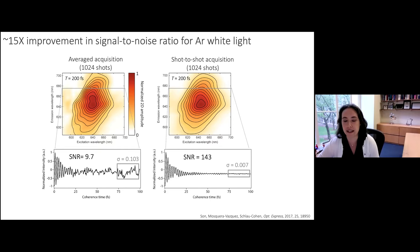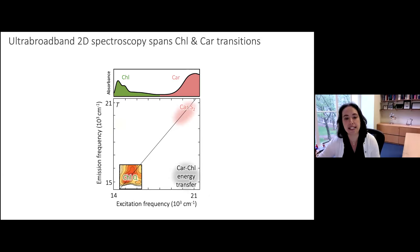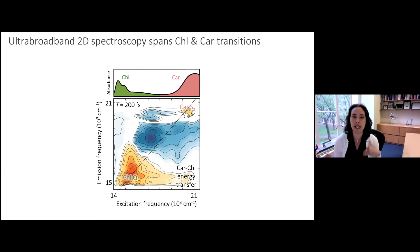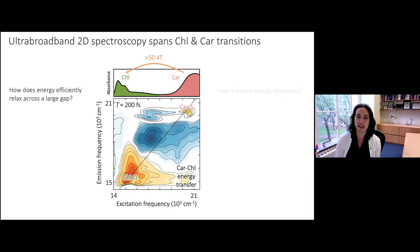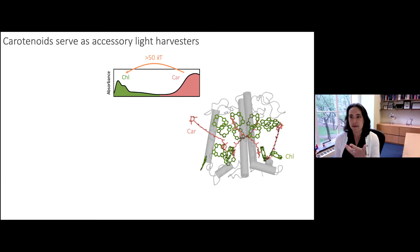With this apparatus in hand, we can go back to LHC2 and record 2D spectra that span both the carotenoid and chlorophyll transitions, allowing us to address the two questions I posed: how does energy efficiently relax across the large gap, and how is excess energy dissipated? I'll start with the first — how these blue states transfer energy into the chlorophyll states.